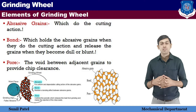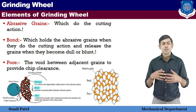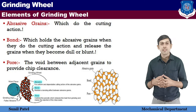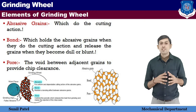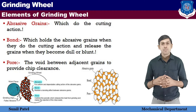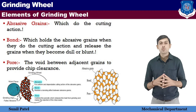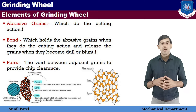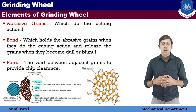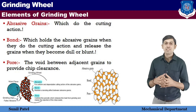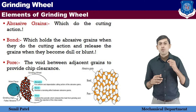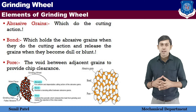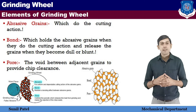The third element is Pores. Pores are the open air spaces between two abrasive particles. The function of pores is to help remove chips and relieve the heat generated during grinding. In the diagram, the orange color represents the abrasive particles, the black color is the bond, and the white color is the pores.